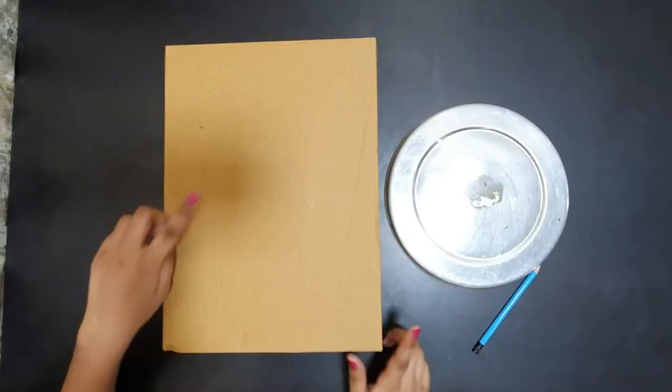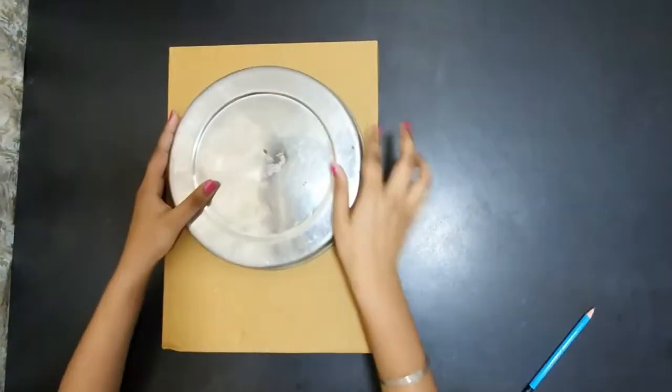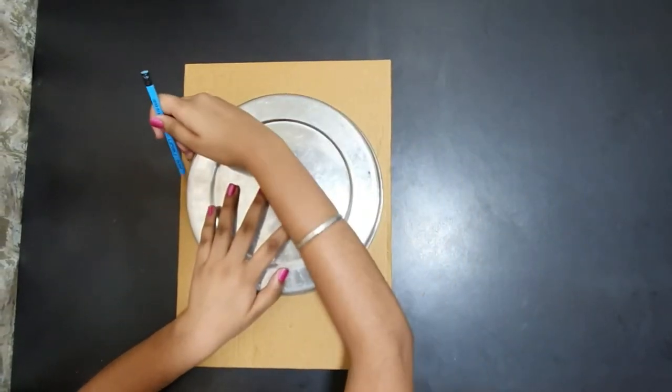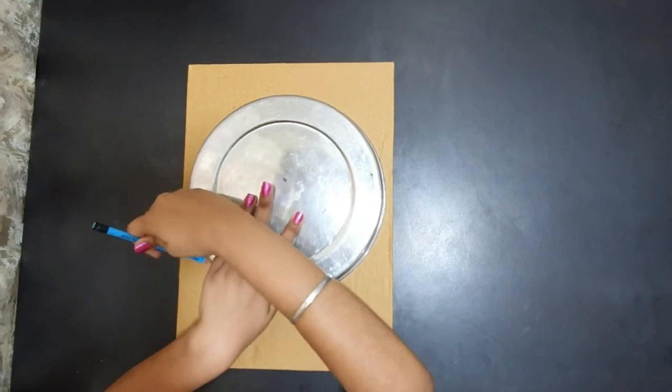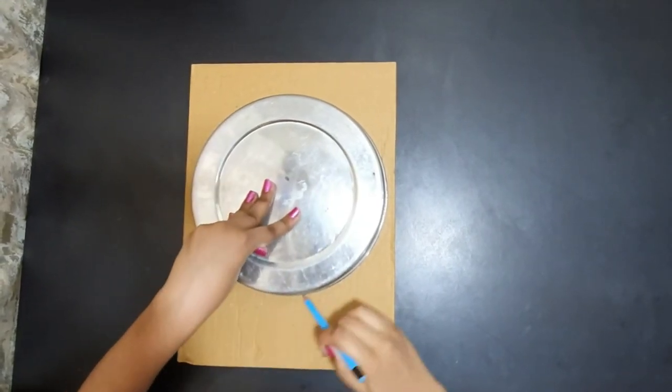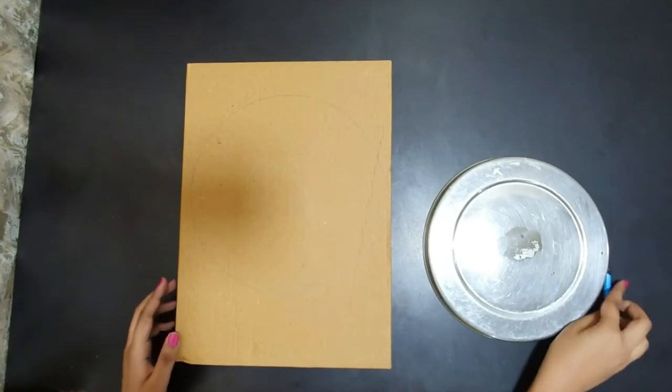First, we take cardboard. We will draw a circle with a pencil, just like this.